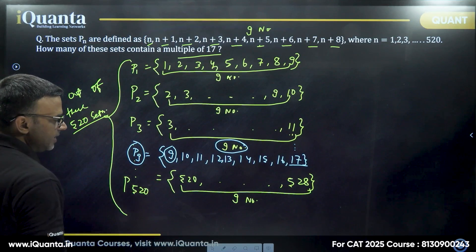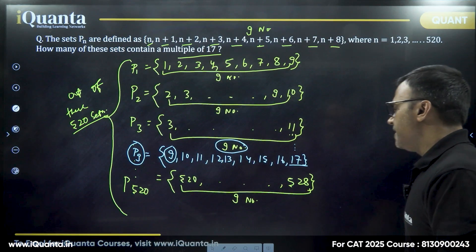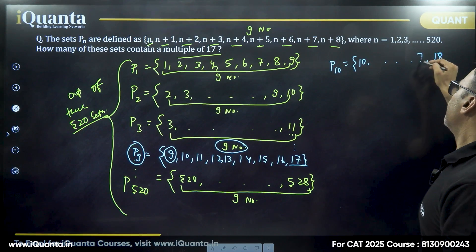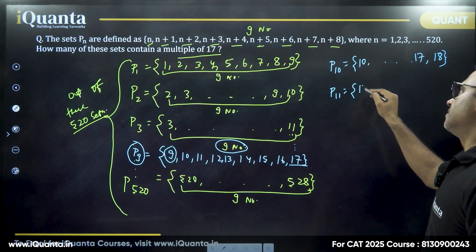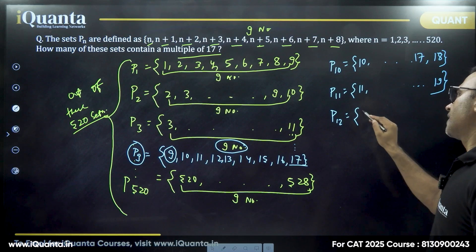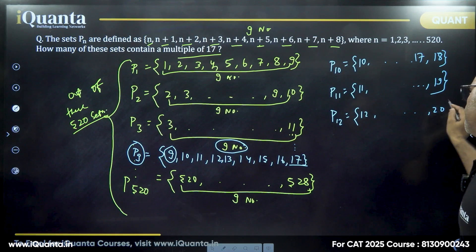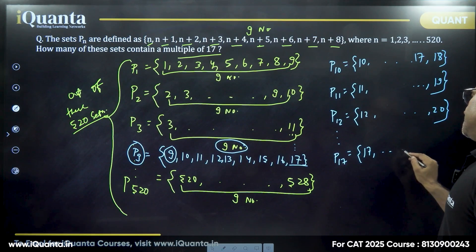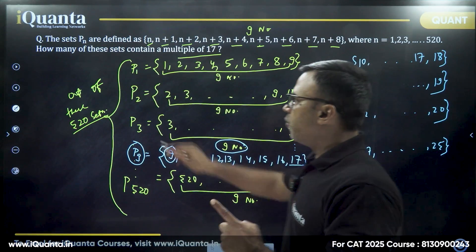After P9, many more sets will also contain a multiple of 17. P10 starts at 10 and ends at 18, so it definitely contains 17. P11 starts at 11, ends at 19 — somewhere in there is a multiple of 17. P12 starts at 12, ends at 20 — again contains 17. This continues through P17, which starts at 17 and ends at 25.